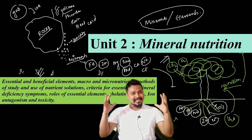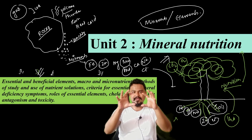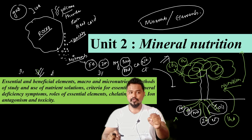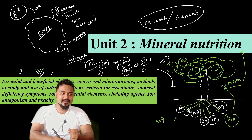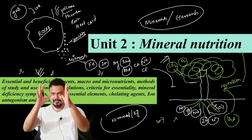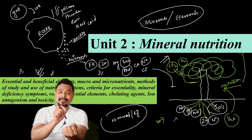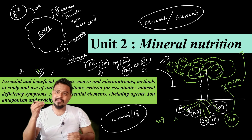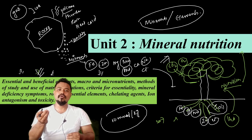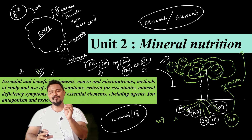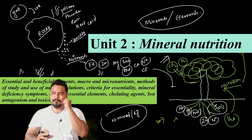What is the difference between macro and micronutrients? These are categories of elements in mineral nutrition. Macronutrients are present at concentrations greater than 10 millimoles per kilogram of dry matter. Micronutrients are present at concentrations less than 10 millimoles per kilogram of dry matter. That is the key difference between macro and micronutrients.